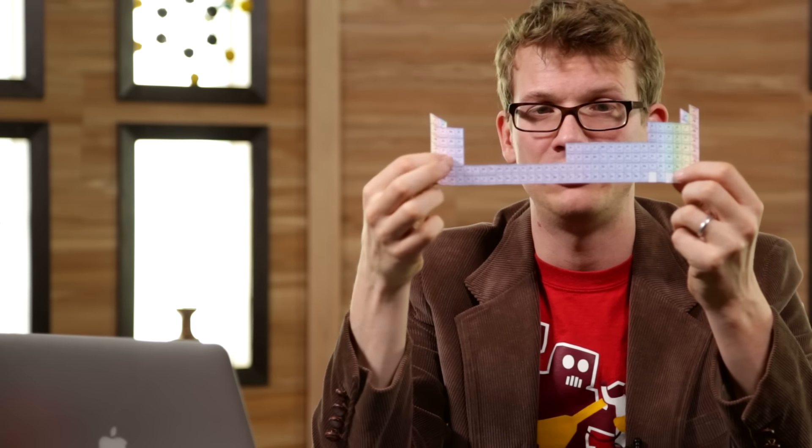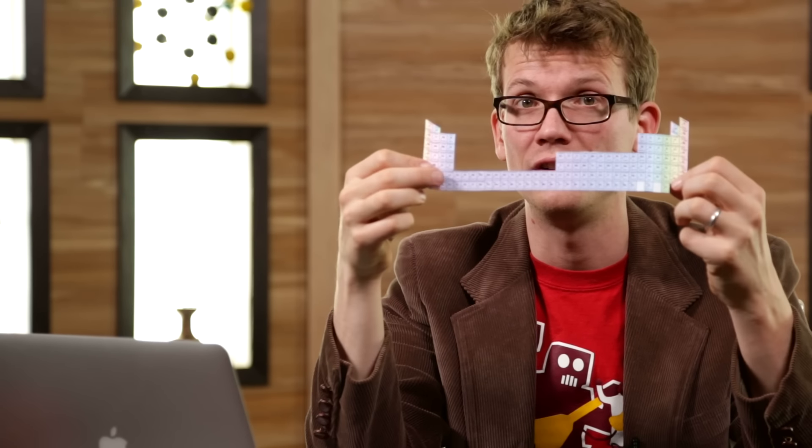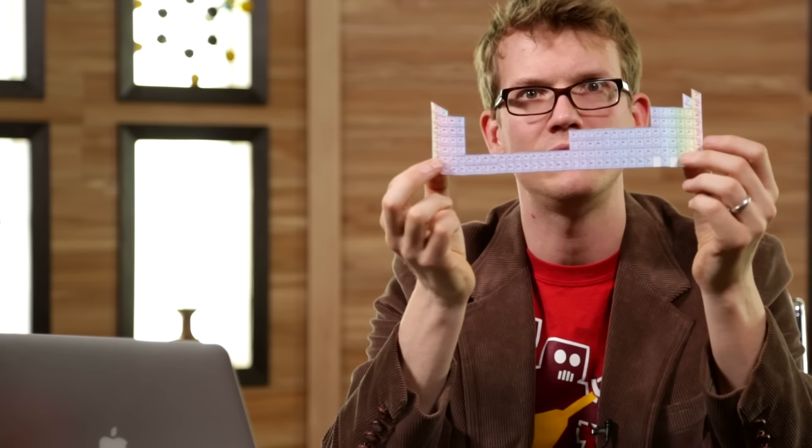The lanthanides and actinides really should be part of the table, but we separate them out because it's hard to fit that on a piece of paper. Really, this is what it should look like. And really, it would be best if it wrapped around into a circle, so that fluorine and neon and sodium were all next to each other, instead of being on the opposite sides of the map. Because they're just one proton away.